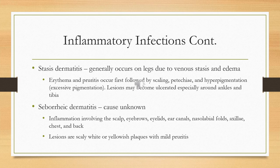With stasis dermatitis, you might initially see erythema and pruritus, and then it may progress to scaling, petechiae, and hyperpigmentation.